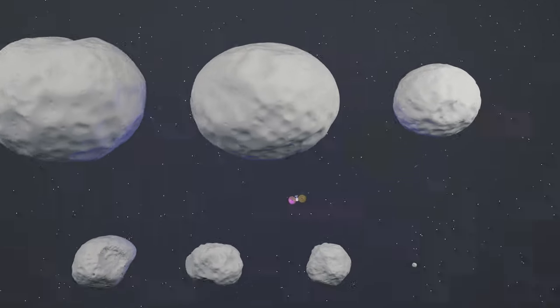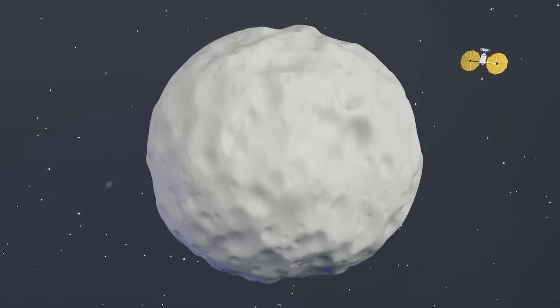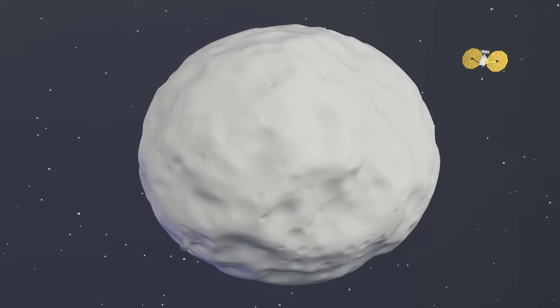As it turns out, Euribides, one of the Trojan asteroids along Lucy's path, has a small satellite or moonlet orbiting it.